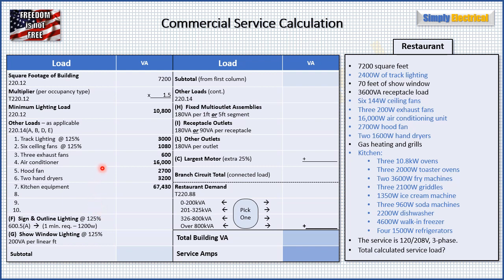First, track lighting: we've got 2,400 watts times 125% equals 3,000. We have six 144-watt ceiling fans — times 125% equals 1,080. Then we have three exhaust fans, an air conditioning unit, a hood fan, two hand dryers, and all our kitchen equipment. We take the nameplate of everything and add it all up, getting 67,430 VA. That's the last item in this section.